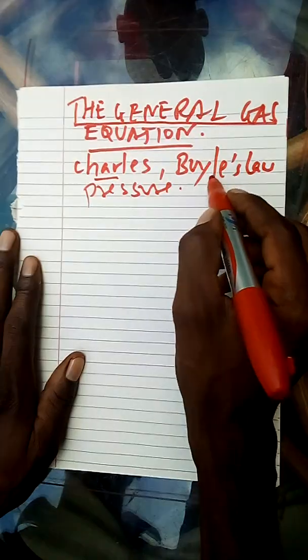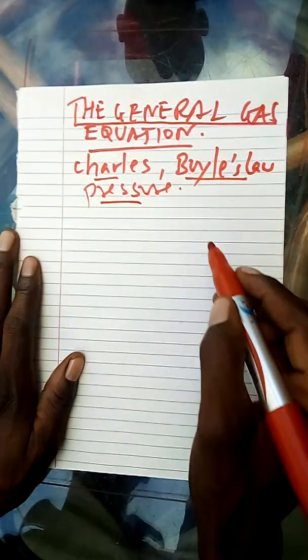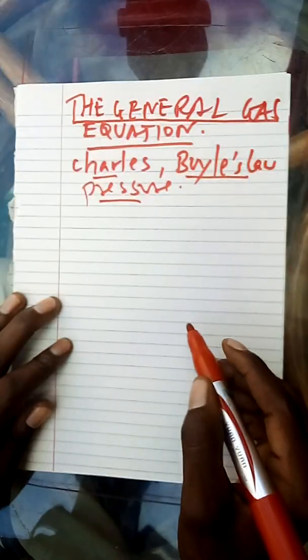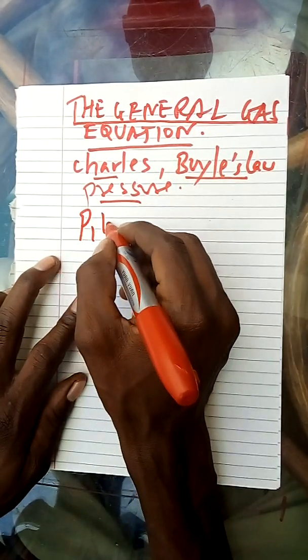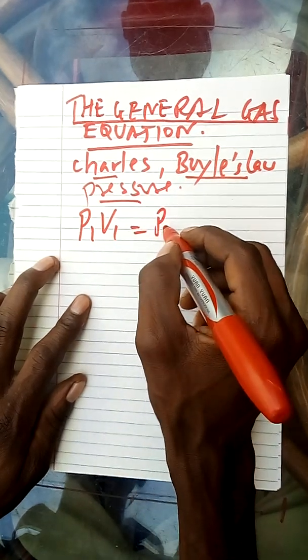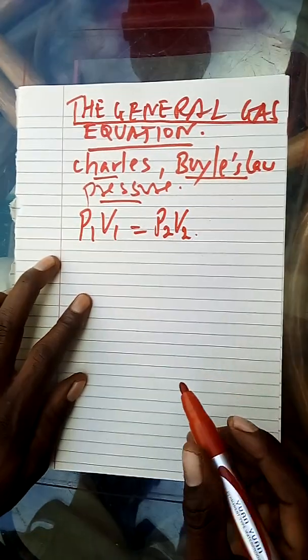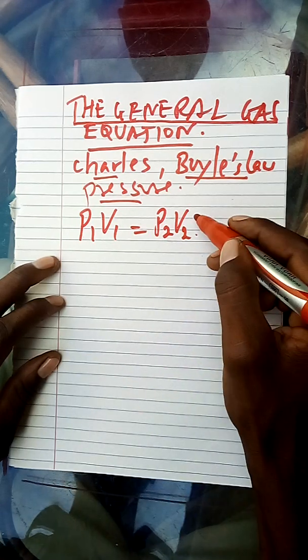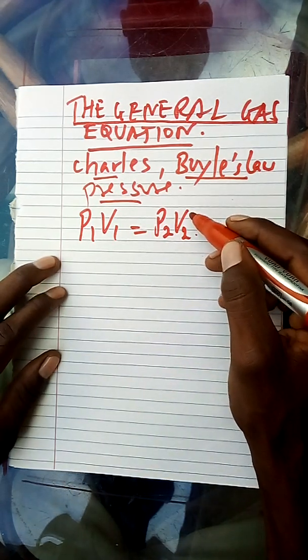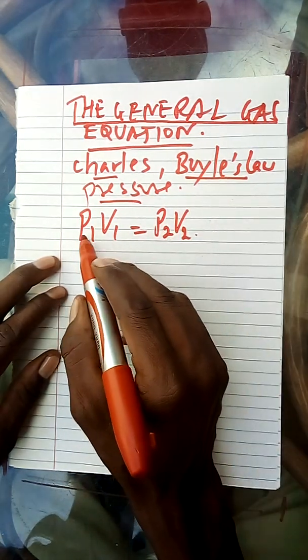Therefore, any of these two laws can be used to derive the general gas equation. Let us use Boyle's law and Charles' law. Boyle's law states that P1 V1 is equal to P2 V2.